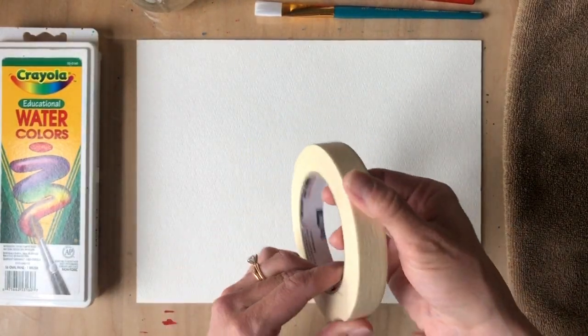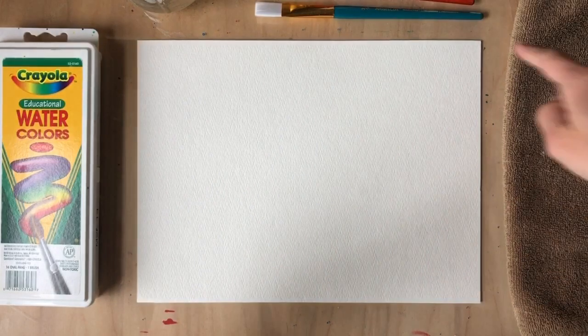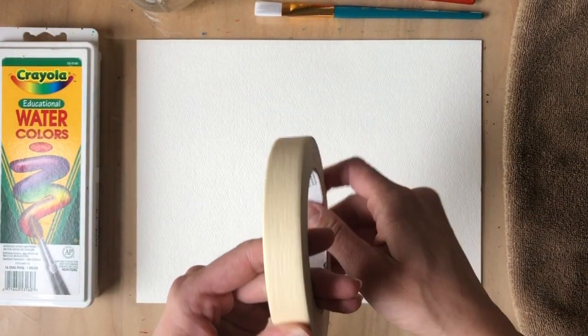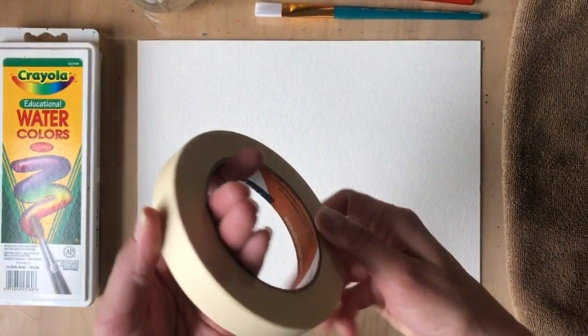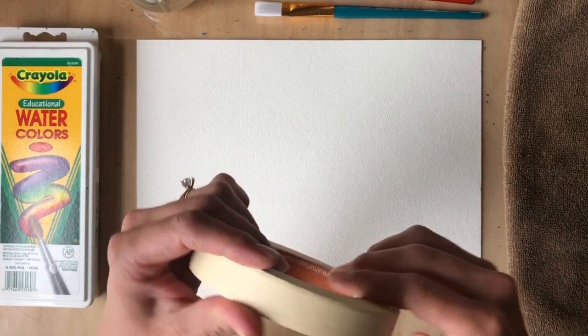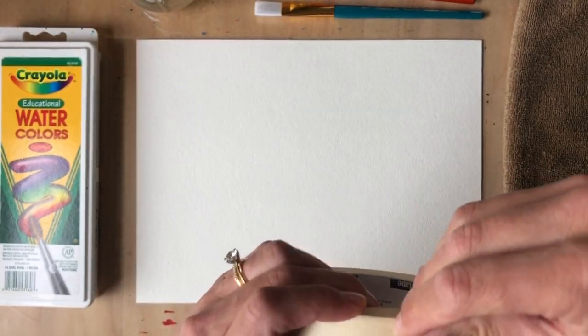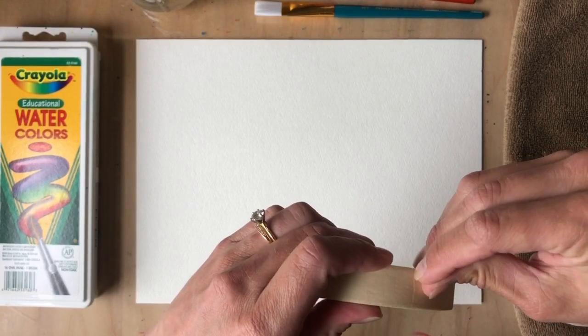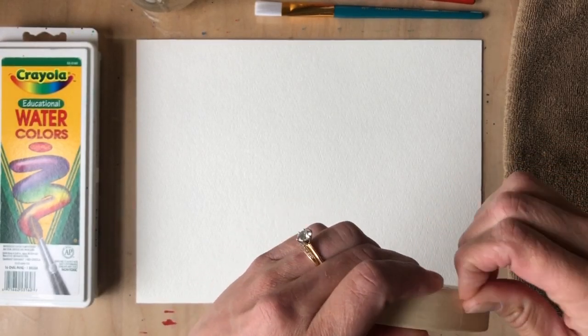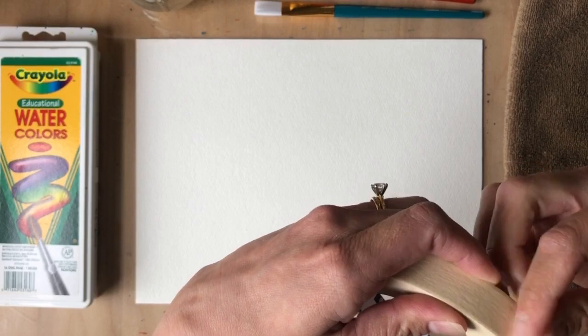I'm gonna make a frame around mine because I want a nice clean edge. Now, what we're gonna do before we put our tape down is a pre-stick. You want to get rid of some of the stickiness of your tape so it doesn't rip your artwork later on.